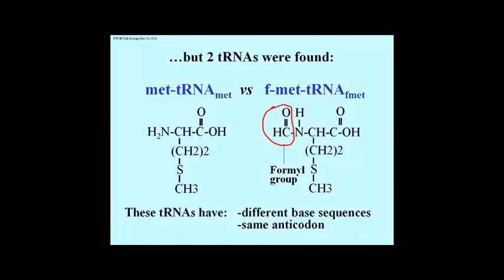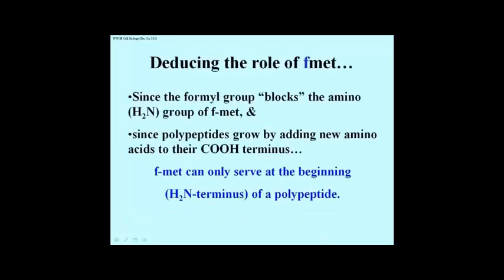You may remember, tRNAs are processed after they're transcribed to include a lot of unusual bases. So these two tRNAs — tRNA sub-met and tRNA sub-fmet — could be sequenced. They had different base sequences, but they did indeed have the same anti-codon. The question was: what is F-met for? Why do you even have this? Why are there two tRNAs, and why is there an F-met?